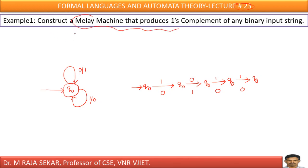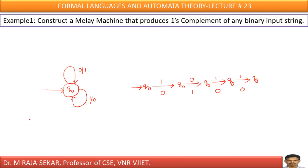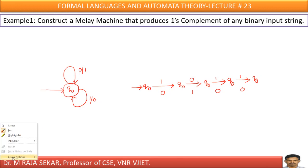Example 1: Construct a Mealy machine that produces the one's complement of any binary input string. We already solved this type of problem in Moore machine. One's complement means one must be replaced by zero and zero must be replaced by one. Just one single state is enough to solve this problem. If I give input zero, the output must be one.